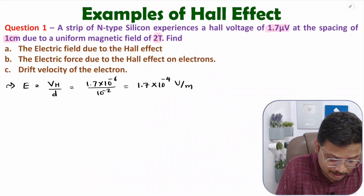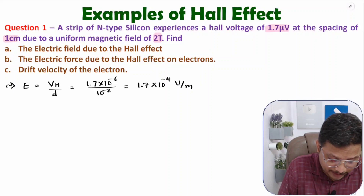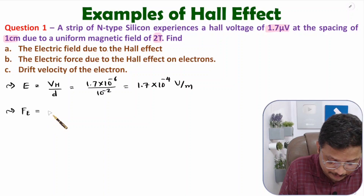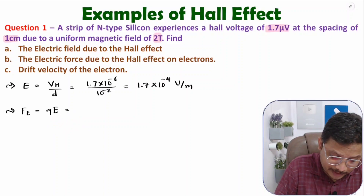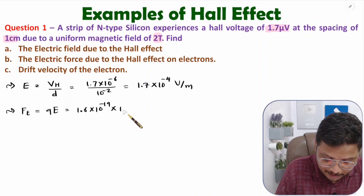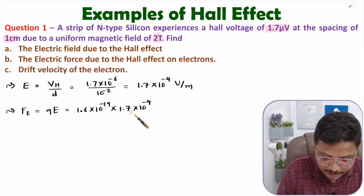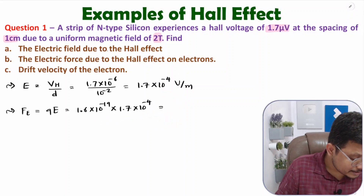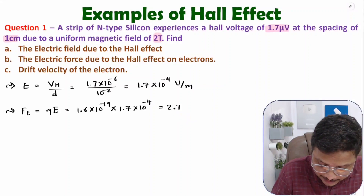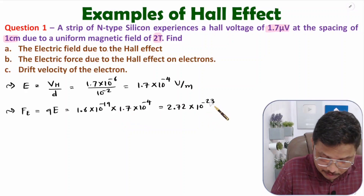Second part: find the electric force due to Hall effect on electrons. Electric force Fₑ = charge × electric field. The charge of an electron is 1.6 × 10⁻¹⁹ C, and electric field is 1.7 × 10⁻⁴ V/m. So Fₑ = 1.6 × 10⁻¹⁹ × 1.7 × 10⁻⁴ = 2.72 × 10⁻²³ newton.